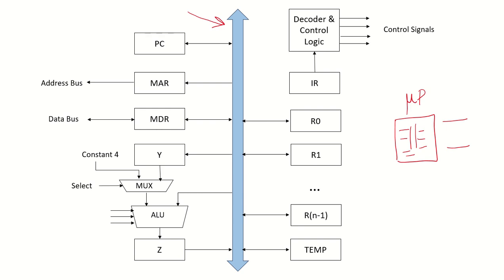There is a program counter which keeps track of the address of the next instruction, and this is connected to the internal bus. We have a memory address register (MAR) which is connected to the internal bus taking input from it, and also connected externally to the address bus going to the memory. Then there is an MDR, the memory data register, which is connected to the internal bus as well as the external data bus.